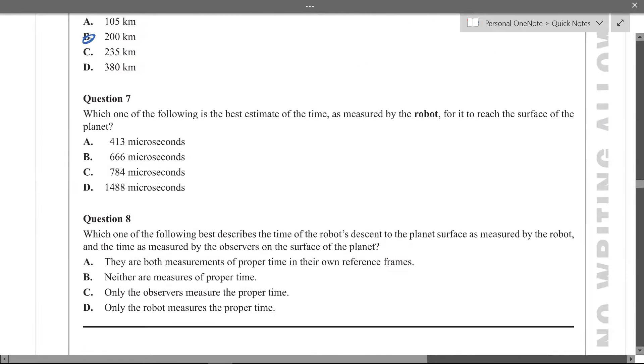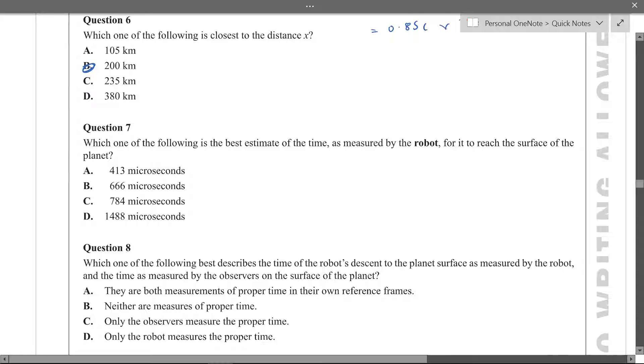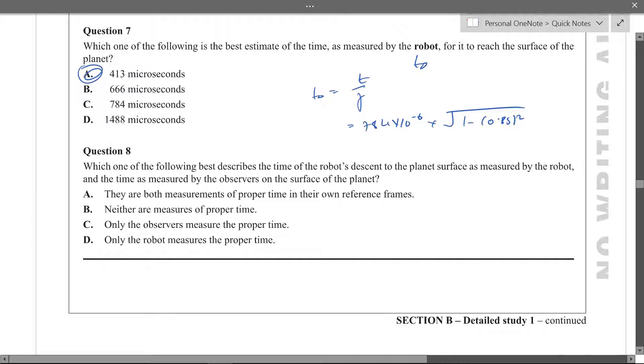So question seven, which of the following is the best estimate time is measured by the robot? So by the robot is t0, so t0 is t on gamma. So t is 784 times 10 to the minus 6 times square root of 1 minus 0.85 squared and put that into a calculator you just get a. Which of the following best describes the time it takes for the robot to descend to the planet as measured by the robot when compared to the observers?